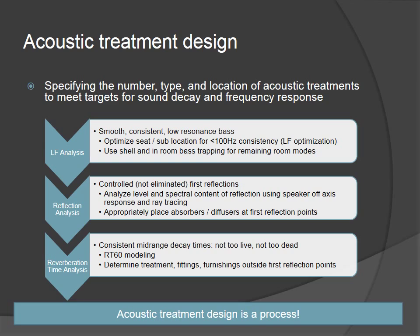For low frequency analysis, we're looking for smooth, consistent, and low-resonance bass — basically optimising seat and subwoofer locations for sub-100 Hz consistency. There's limited scope for acoustic treatment below 100 Hz, so you should aim to place seats and subwoofers properly to minimise the work needed. The room shell — walls, ceiling, floor — can provide bass trapping, and what remains can be addressed through in-room bass traps, mainly targeting the 100–300 Hz region.